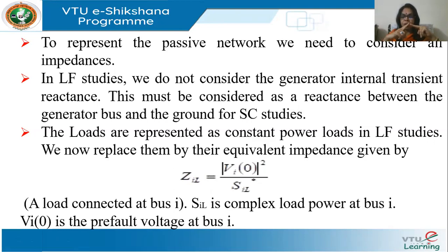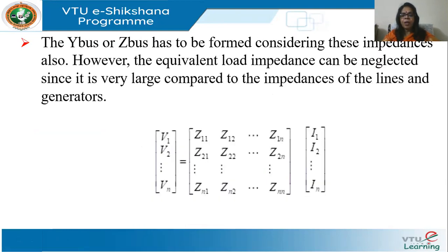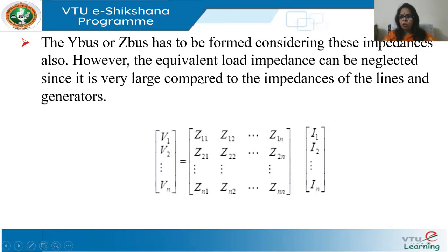So there are two changes you have to make to your bus admittance matrix from the one used in load flow. First, you have to include the generator transient reactance as a shunt element between the generator bus and the ground. Second, you have to consider the load impedances calculated as Z_IL = |V_I0|² / S_IL*. In some studies you can even neglect the load impedance because it's very large compared to the impedances of lines and generators, and even if neglected it will not cause much error.